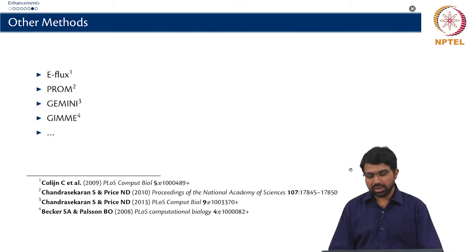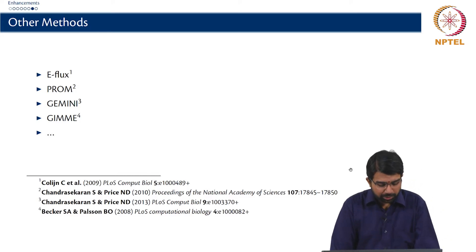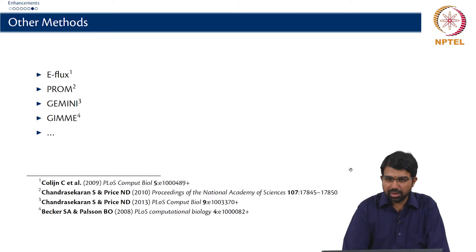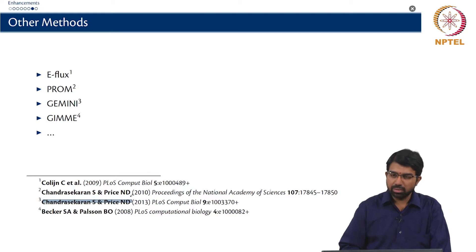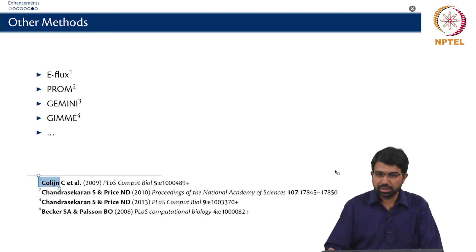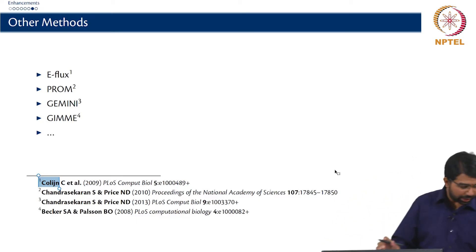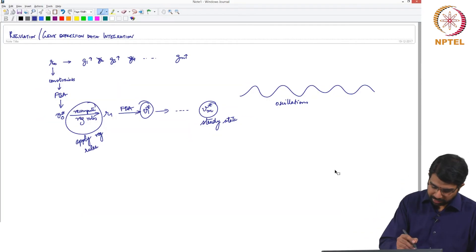There are also other interesting methods worth reading about. One we will discuss today is E-flux, but there is also PROM (probabilistic regulation of metabolism), GEMINI, and GIMI — all fancy acronyms for methods that integrate regulatory and expression data. Chandrasekharan and Price also have a good review on methods for integrating gene expression data into flux balance models.